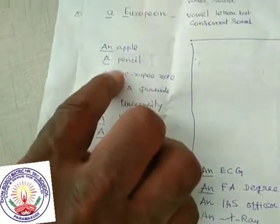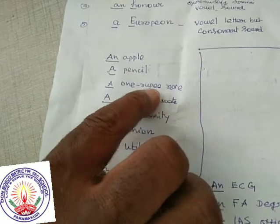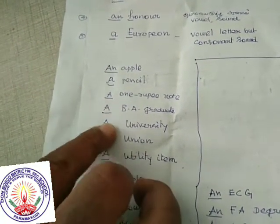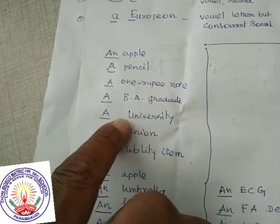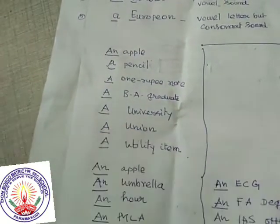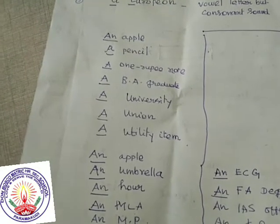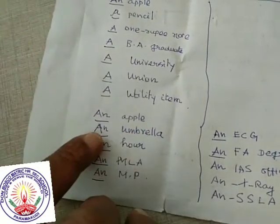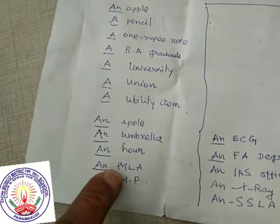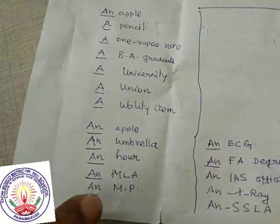A pencil — 'P' is a consonant sound. Apple starts with a vowel sound 'A', so we use 'an'. A one-rupee note starts with 'one', so we use 'a'. A BA graduate — 'B', 'A'. University starts with 'U' but sounds like 'yoo', so we put 'a'. An apple, an umbrella, an honor — 'M' is not a vowel, but MLA and MP have an equivalent vowel sound at the start, so we use 'an'.